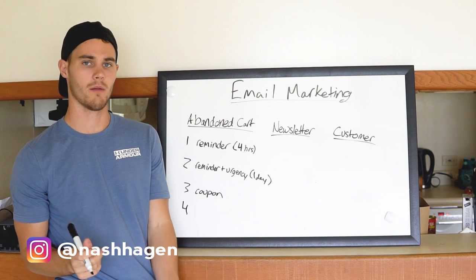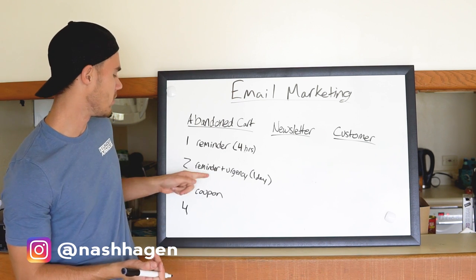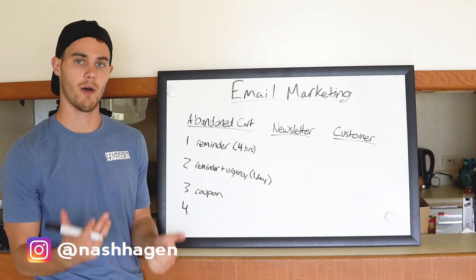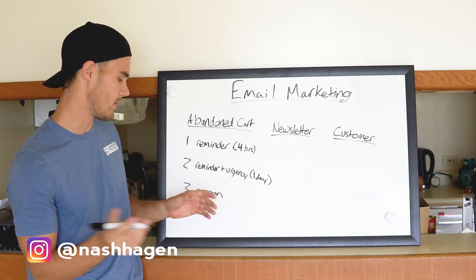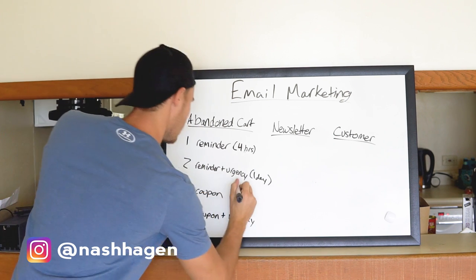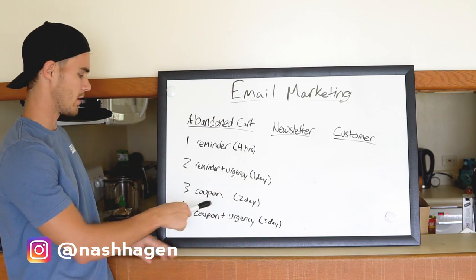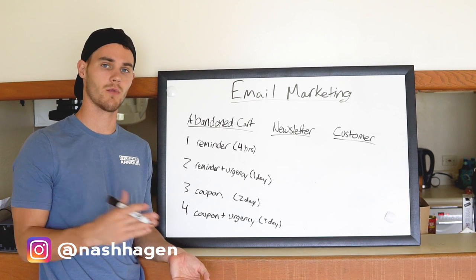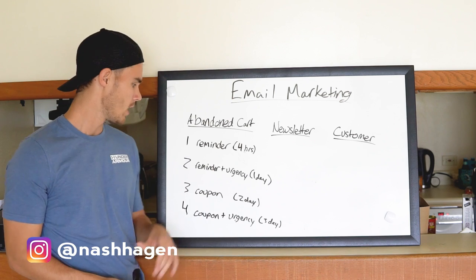The third email is a coupon or incentive — maybe buy one get one free, whatever you want — to make people more incentivized to purchase. I don't do it on the first or second email because I don't want to give discounts to people who would have purchased anyway. I wait until after those two emails, then bring in the coupon on day two. The fourth email is coupon plus urgency — you give them the coupon, say it's 50% off, but say it only lasts 12 hours. Send this on day three.